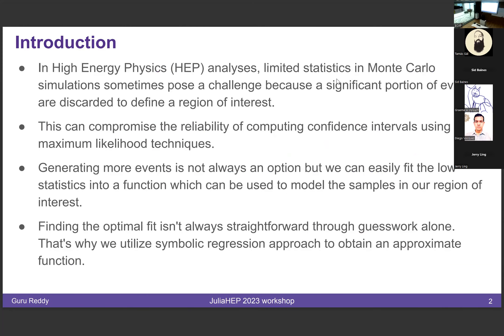In high energy physics, it's often a problem that the statistics become very low because we apply a lot of selection criteria. This poses a problem because the limits that we compute using maximum likelihood techniques are not reliable anymore. One idea is to generate more events to tackle this problem, but that's not always an option. What we can do is fit these low statistics with an analytical function and extrapolate data points from that.